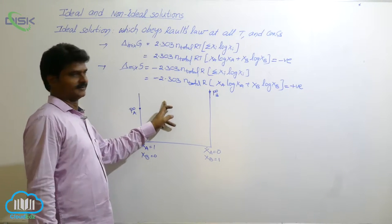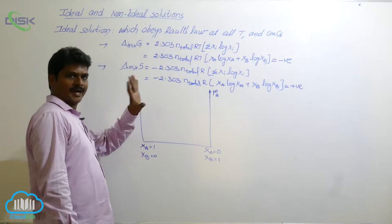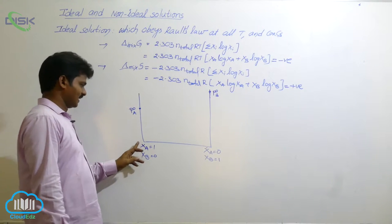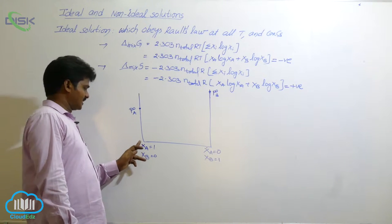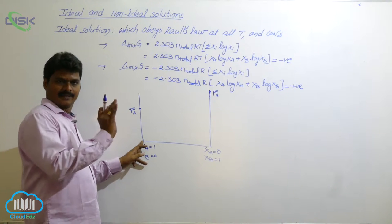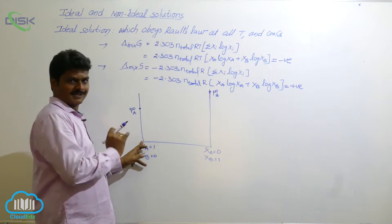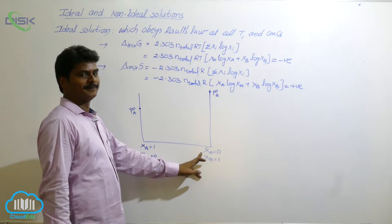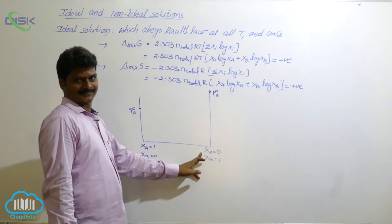Let's see the graph related to ideal solutions. At this end, only component A is present. At this end, only B is present.